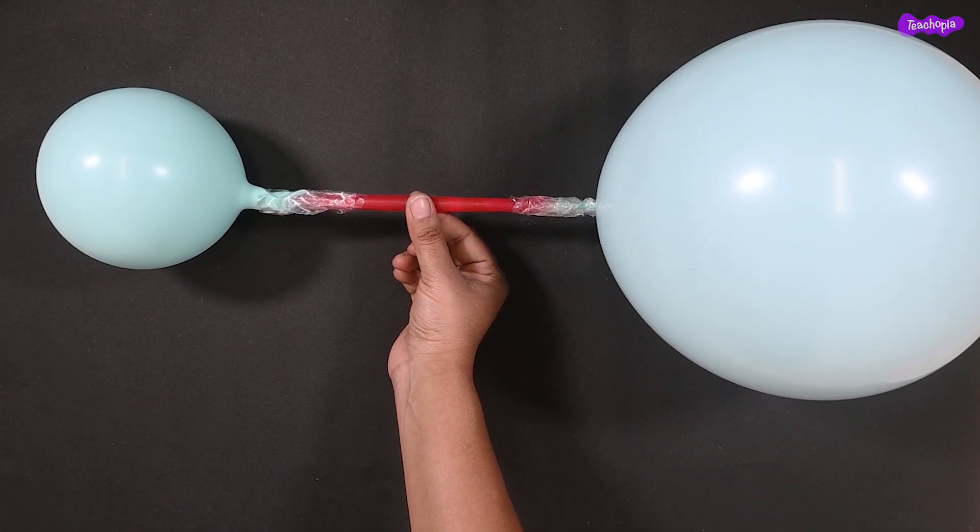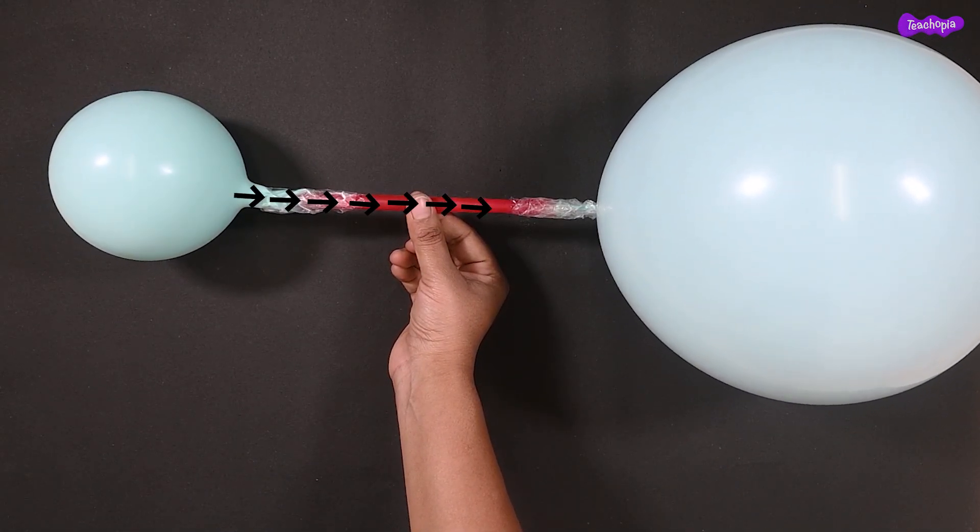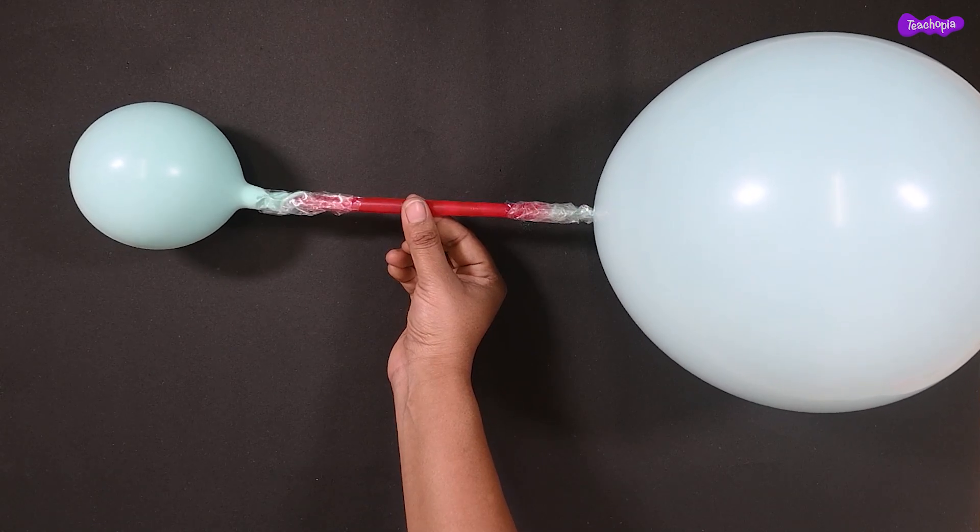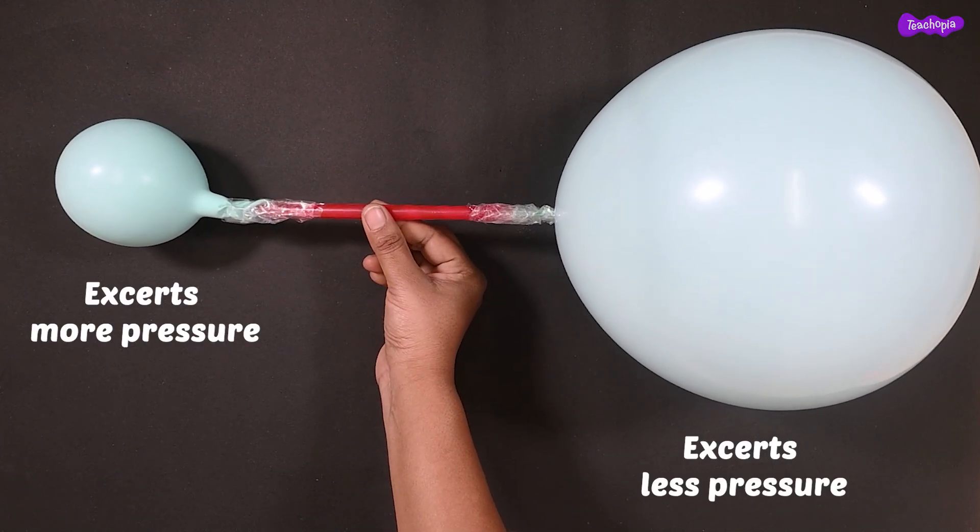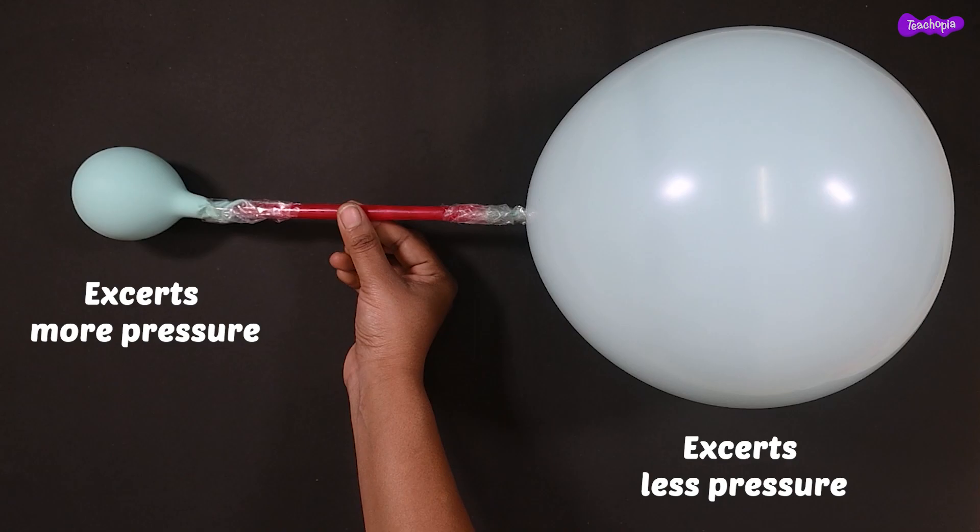So we can conclude that air moves from the small balloon to the big balloon because the small balloon exerts more pressure and the big balloon exerts less pressure.